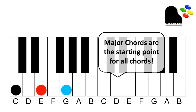So we have our root, we have our third, and we have our fifth, represented with these colors. We have black as the root, red as the third, and blue as the fifth.